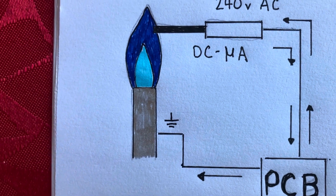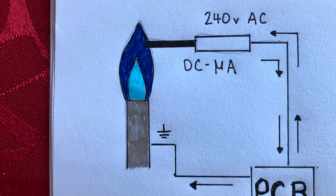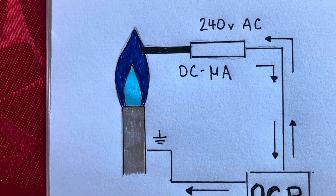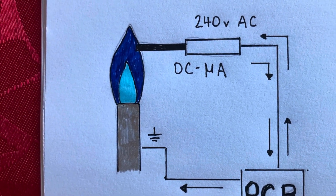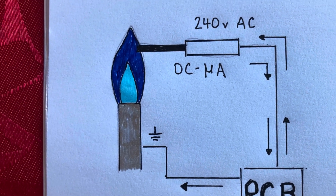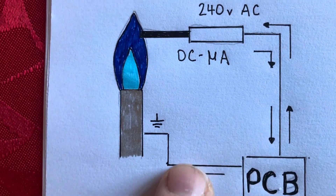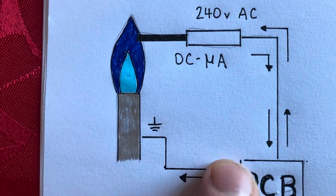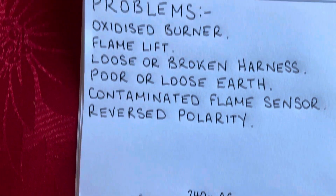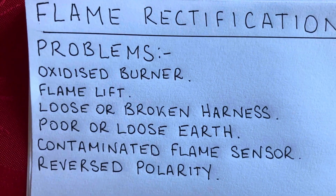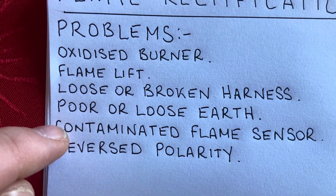Poor or loose earth is very important — we need a good earth. You can check this during your electrical checks before you start working on the boiler: polarity, short circuit, earth continuity, resistance to earth. When you do that you can test the earth from the main air point on the boiler, and if you haven't got a good earth it can cause poor rectification.